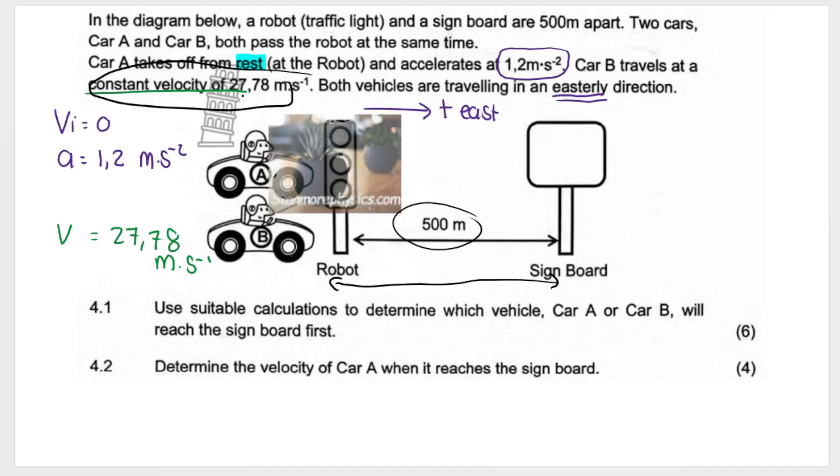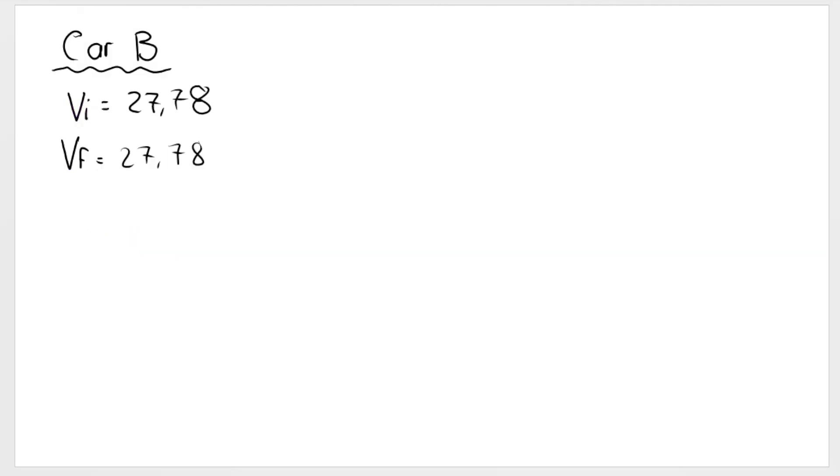What that means is that the initial velocity and the final velocity are the same value, which in this case is 27.78 meters per second. And constant means that they're the same. The initial velocity will be the same as the final.